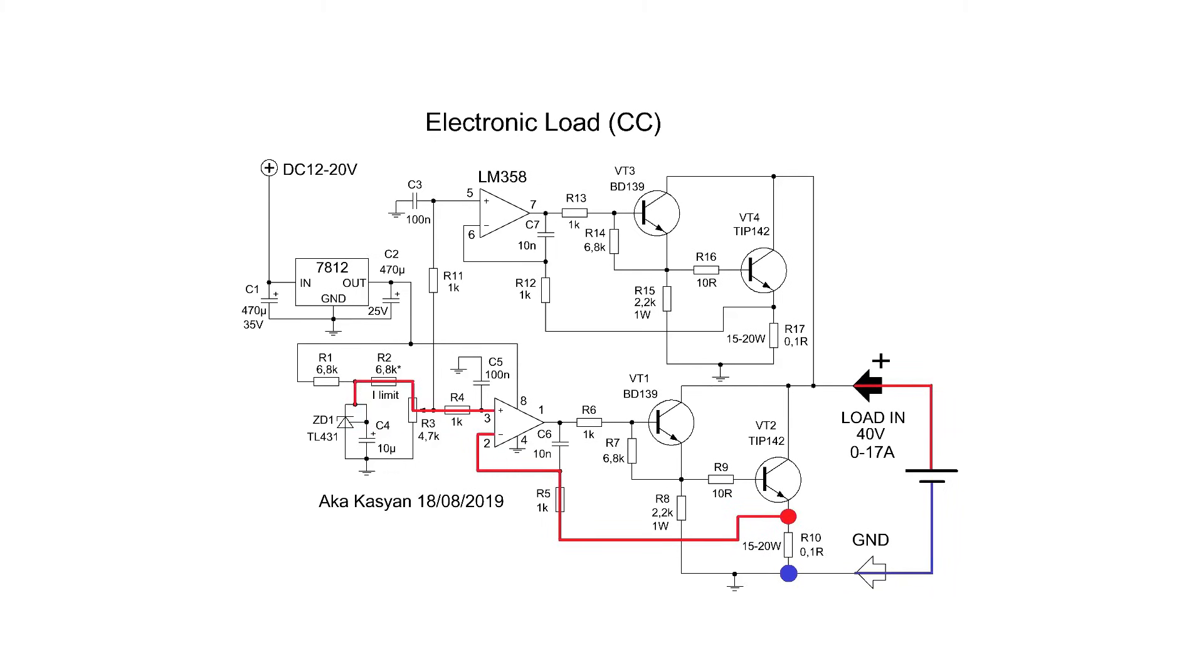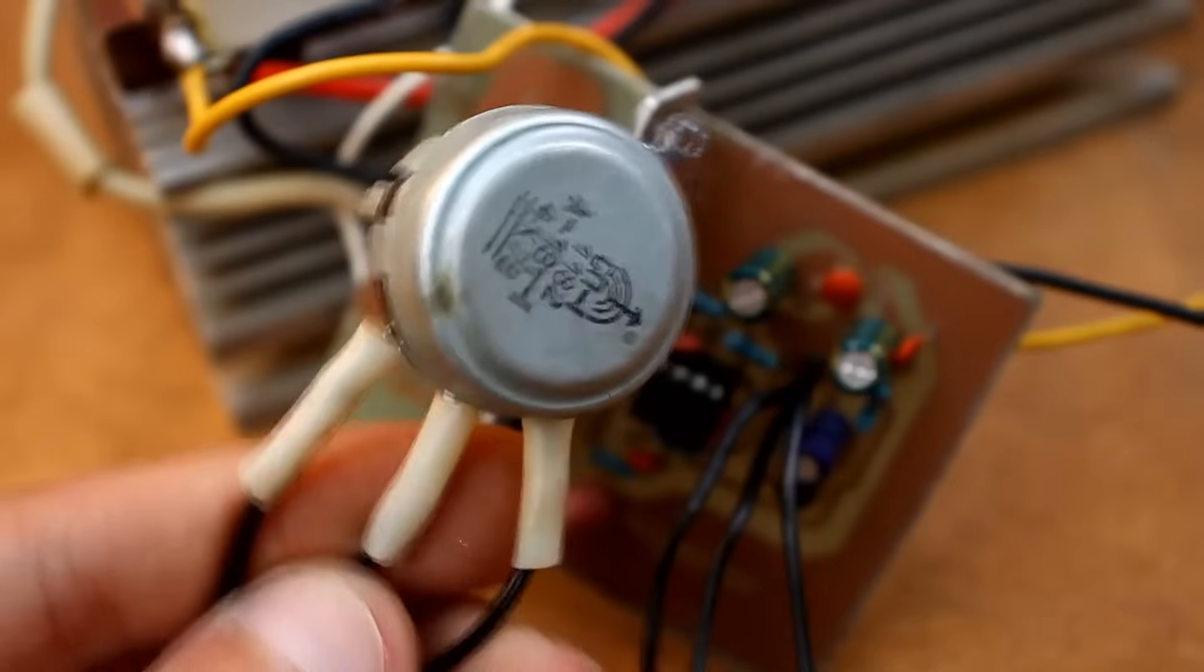The operational amplifier will attempt to equalize the voltage at the inputs by changing its output voltage. The change in output voltage causes the driver transistor to activate. By opening more or less, it supplies voltage to the base of the power transistor, causing it to also begin opening or closing depending on the position of the variable resistor.